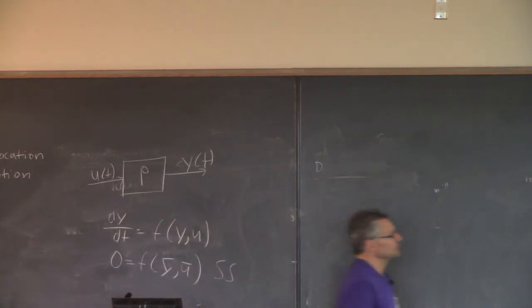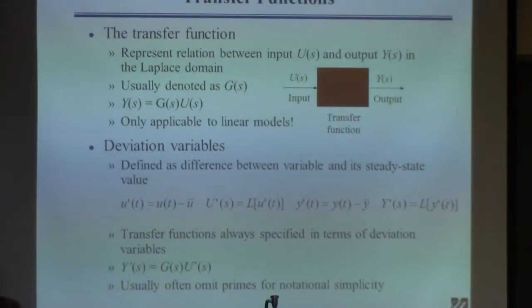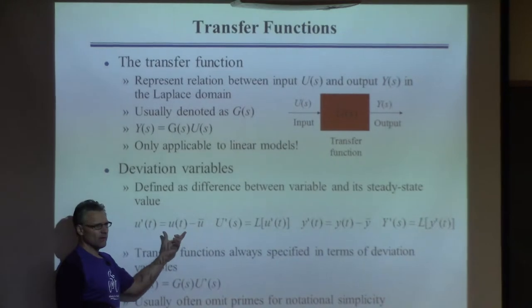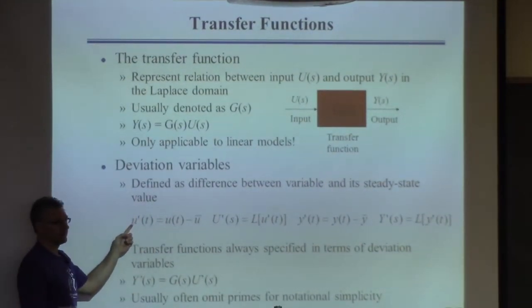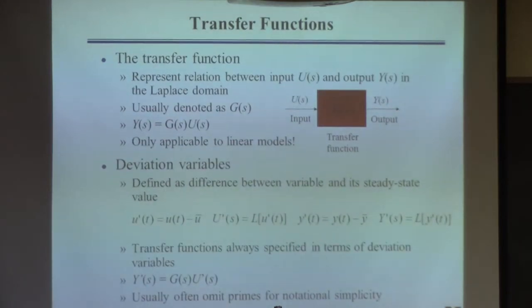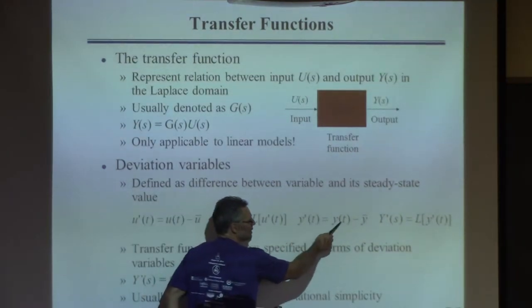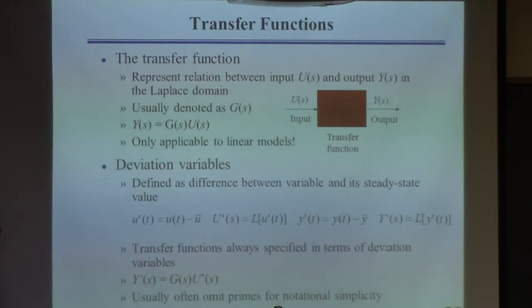These transfer functions are going to be defined in what we call deviations from steady state. We're going to use the notation u-prime — that means the actual value of u minus its steady state value, so it's how far away u is from its steady state. If it's at steady state, u-prime is zero. The same thing with y: y-prime is the difference between the actual value of y and the steady state value of y — that's the deviation from steady state.